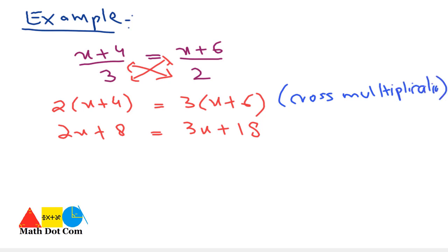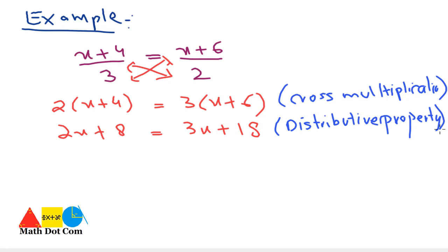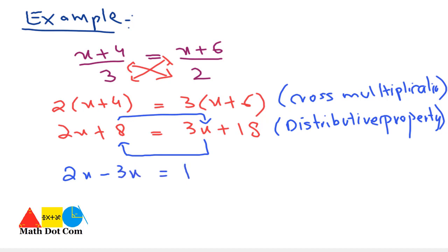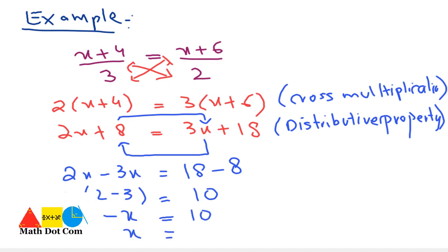We applied the distributive property of multiplication. Now we will arrange terms by keeping like terms on one side and unlike terms on the other. Moving 3x to the left and 8 to the right, with signs inverted: 2x minus 3x equals 18 minus 8. Simplifying: 2 minus 3 gives minus 1, and 18 minus 8 is 10. So minus x equals 10, meaning x equals minus 10.